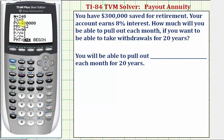The payment amount we'll come back to because we're solving for this, so we press enter to skip past it. We want the future value to be zero after 20 years, so we enter zero for future value and press enter.